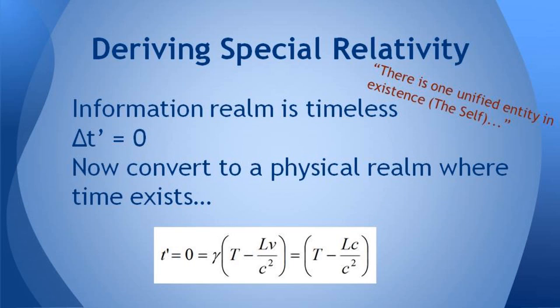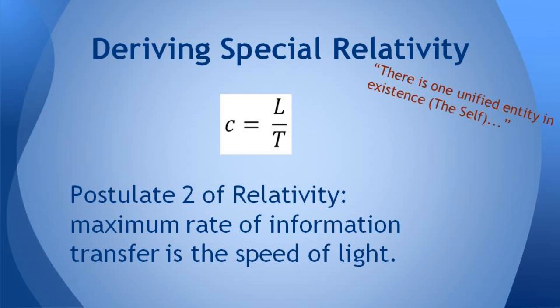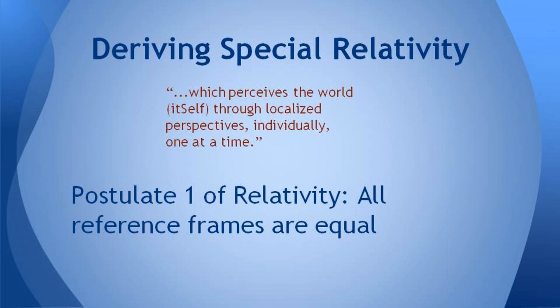But if you convert that via the Lorentz transformation at the bottom to a reference frame which is inertial or stationary or moving in space and time, you get c equals L over T, which is a very trivial result that just says that the amount of time and space in between two events in the physical realm would always be connected or limited by the speed c, the speed of light. And that's the second postulate of special relativity.